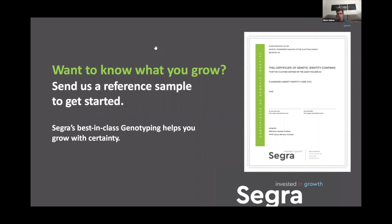Just to probably do one last question that a couple of people have asked about — stepping back and looking at where we are now in the industry, can you share a little bit of the results from that supply chain analysis you mentioned where you took a bunch of market samples and tested them? It sounds like there's a pretty good amount of variation among reported names out there. Reported names are all over the place.